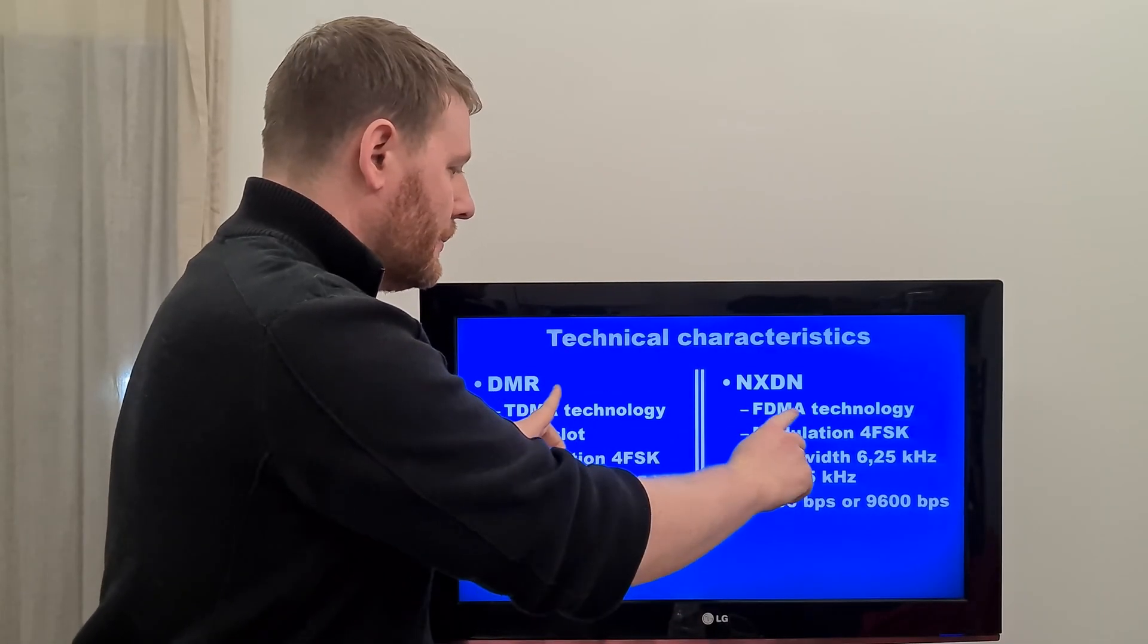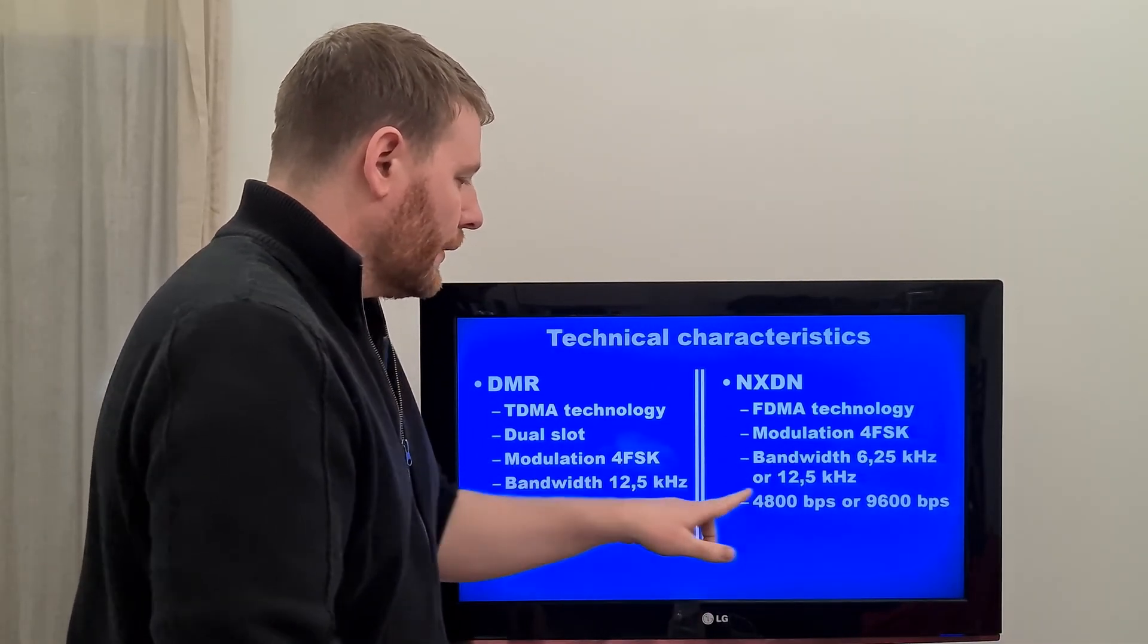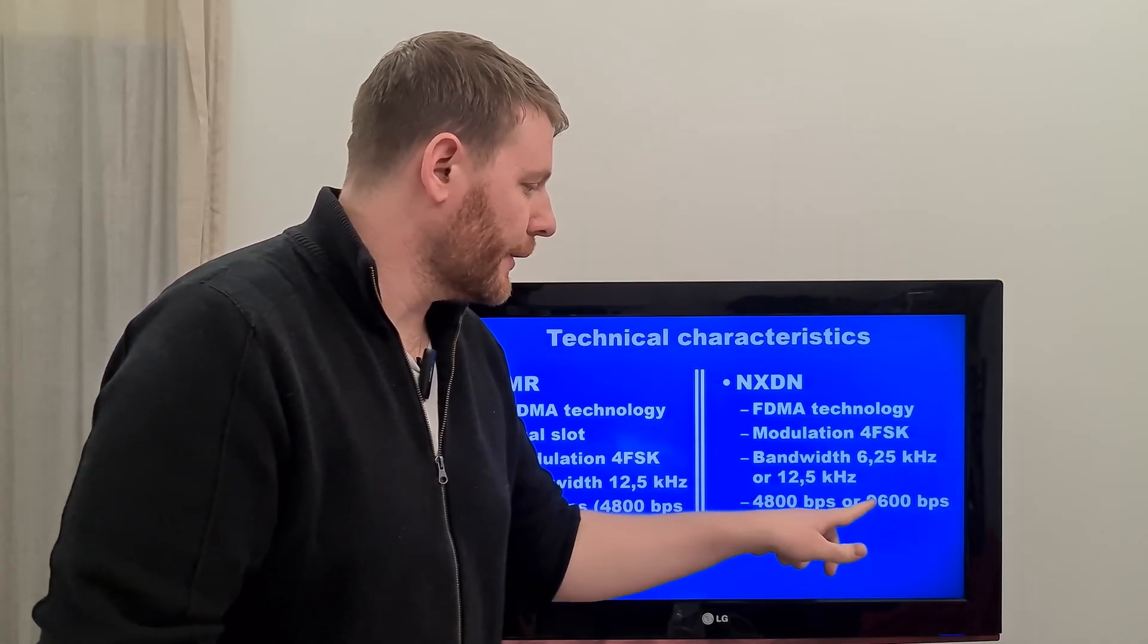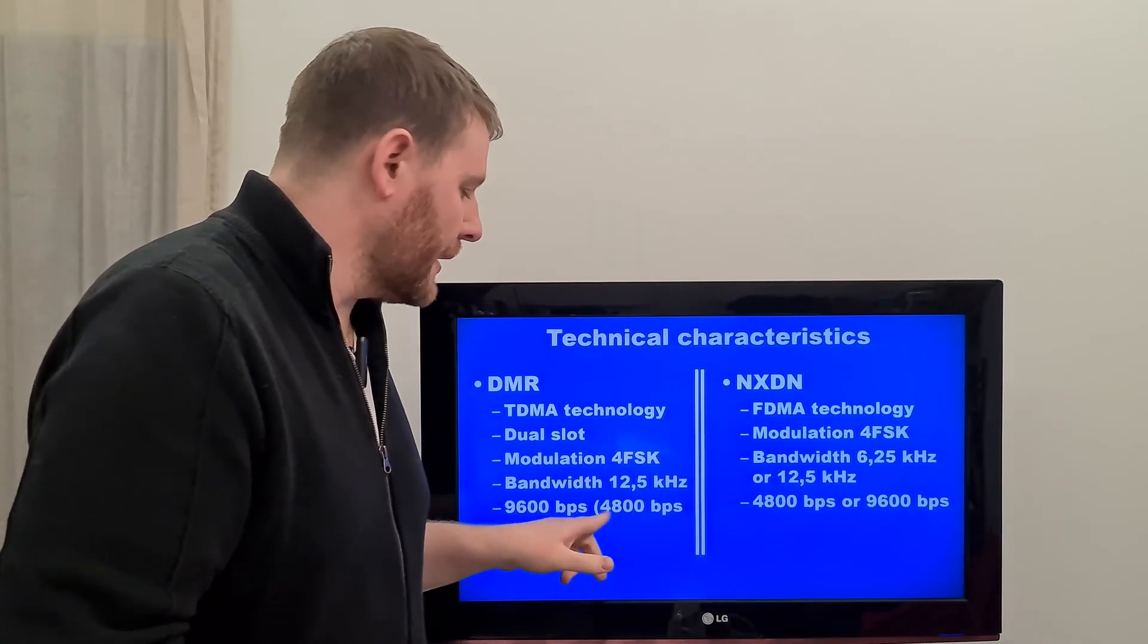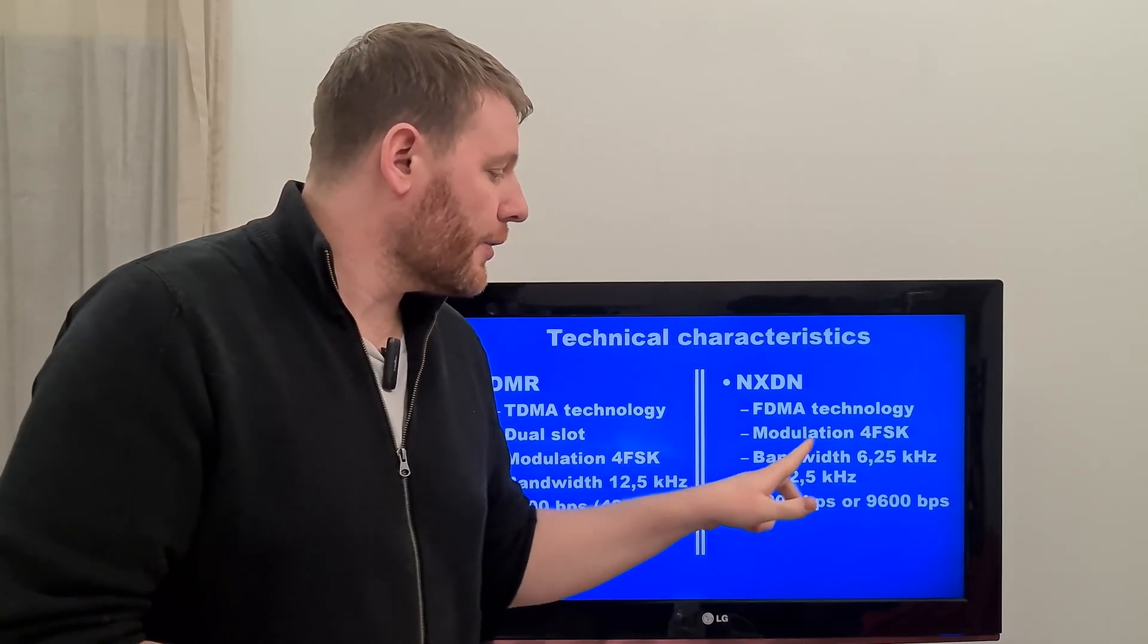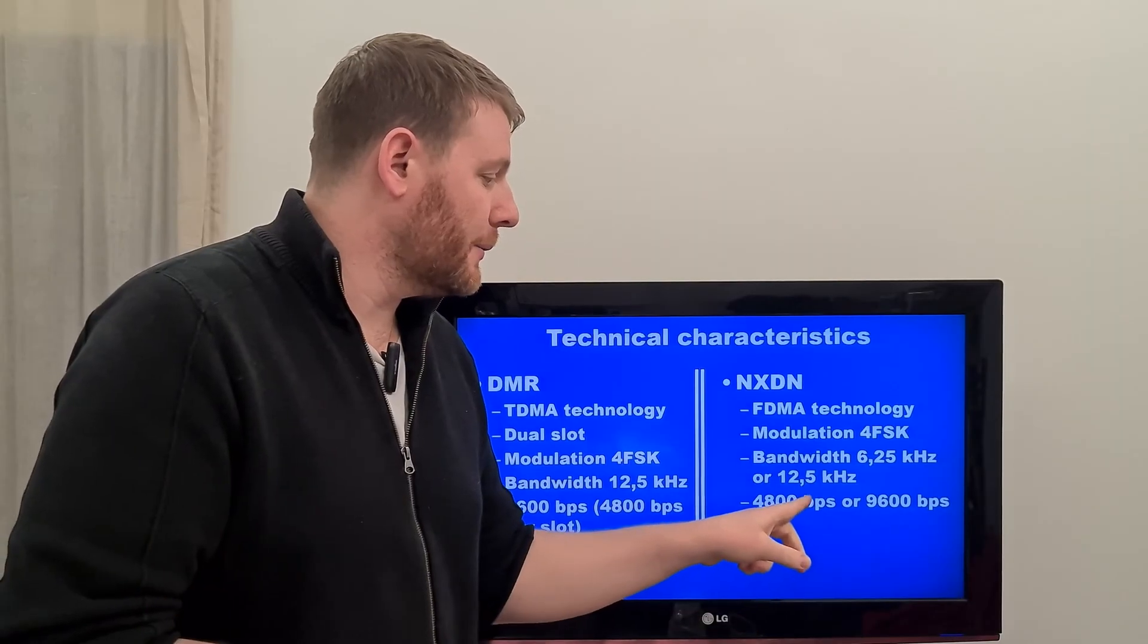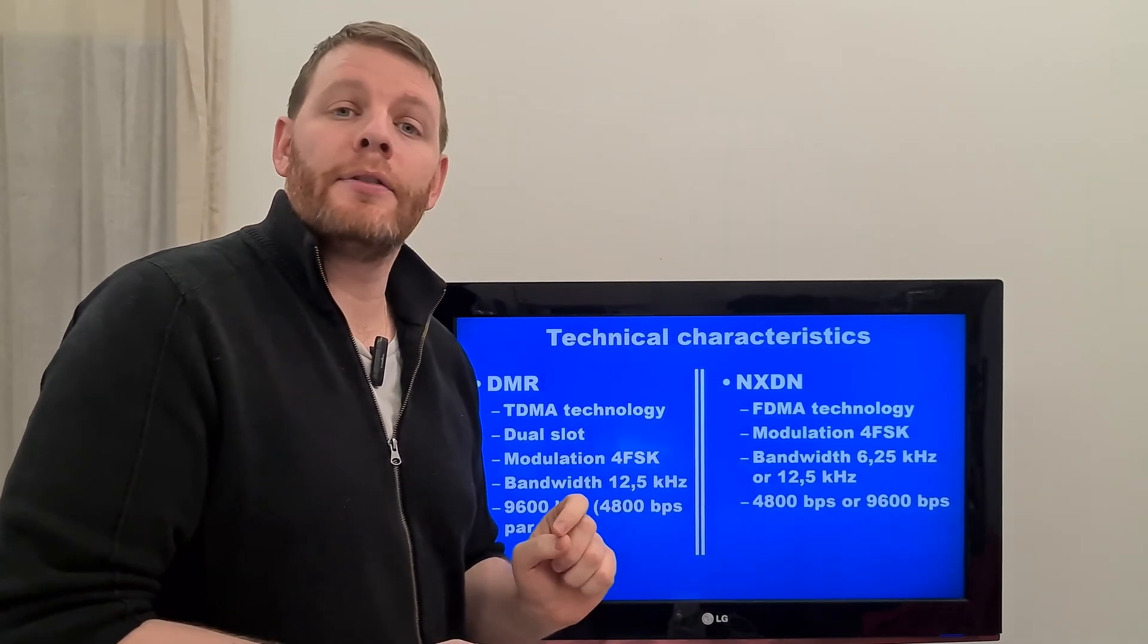So in the NXDN and the DMR, you have one standard, the standard 9.6 kbps used the same bandwidth than the DMR. And the other standard, which is 4.8 kbps per second used the 6.25 kHz.